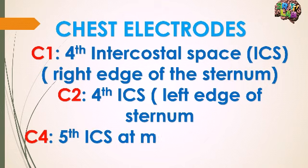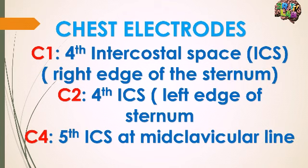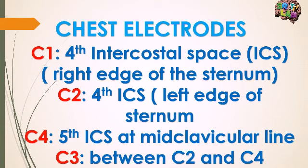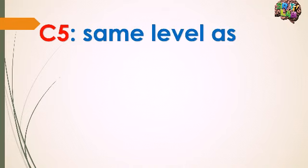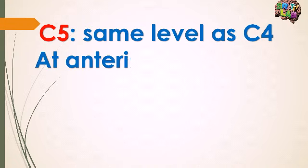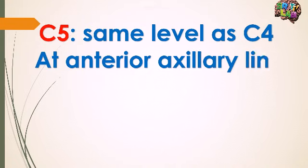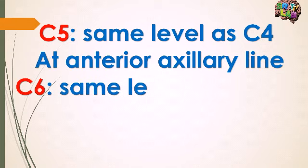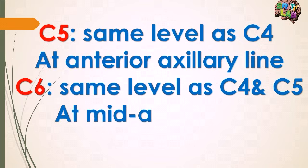C4 is at the fifth intercostal space at the level of the mid-clavicular line. C3 is placed between C2 and C4. C5 is at the same level as C4 at the anterior axillary line. C6 is at the same level as C4 and C5 at the mid-axillary line.